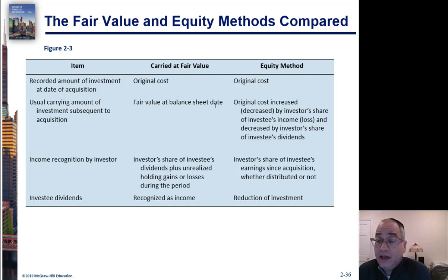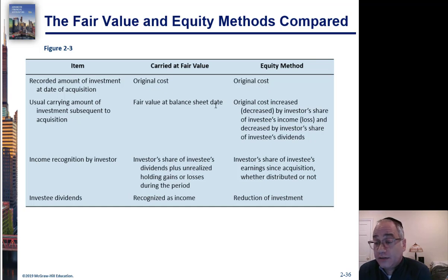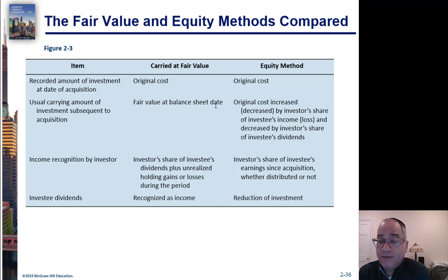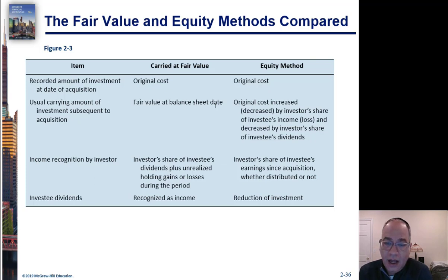Under the equity method, the balance sheet value is going to be the cost plus your share of income, or minus your share of any losses, and also minus any dividends that are declared. Under the fair value method, income will be recorded when the investee declares dividends — for whatever value of dividends the investor receives — and also, of course, if you sell the investment, any gains or losses.